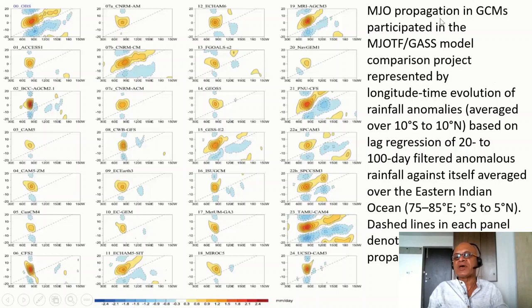This is showing MJO propagation in GCMs that participated in the MJO task force and the GVEX model assessment comparison project represented by longitude-time evolution of rainfall anomalies. They are averaged over 10 south to 10 north which is typically what is done for capturing the MJO related filtered precipitation signals. These are based on lag regressions of 20 to 100 day filtered anomalous rainfall against itself averaged over the eastern Indian Ocean.